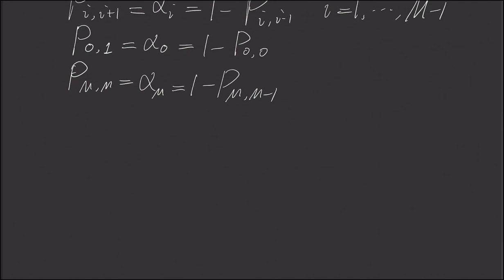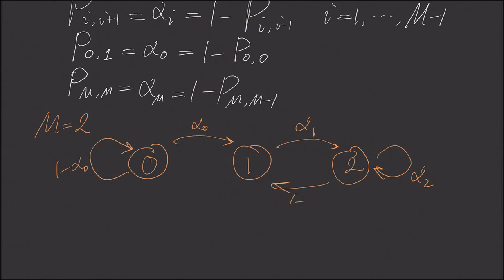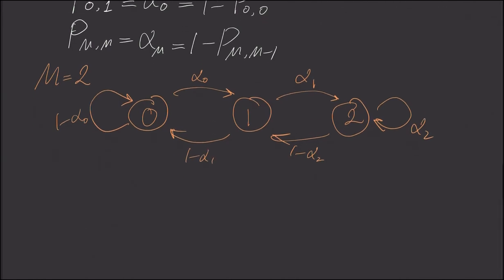To give some intuition, let me draw the state diagram when m equals 2, so we only have 3 states: 0, 1, and 2. From state 0, we have 1 minus α₀ chance to stay at that state, and α₀ chance to go to state 1. From state 1, we have α₁ chance to go to state 2. From state 2, we have α₂ chance to stay there, and 1 minus α₂ to be reflected. From state 1, we have 1 minus α₁ chance to go to state 0.